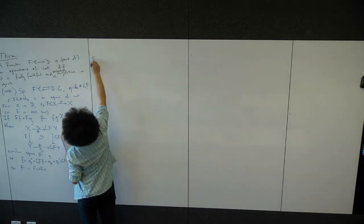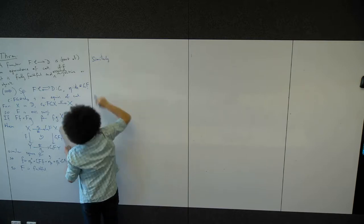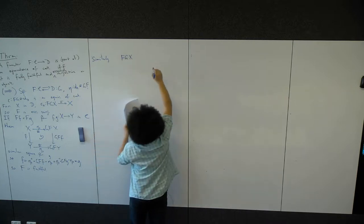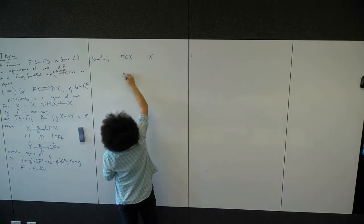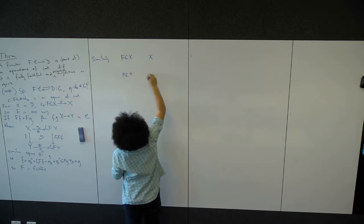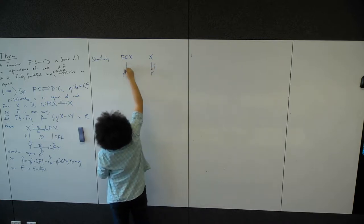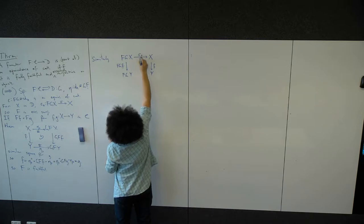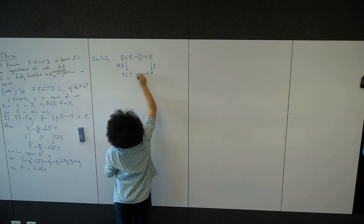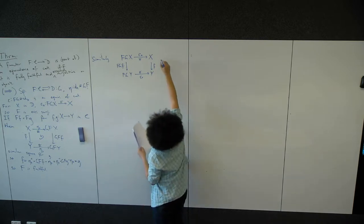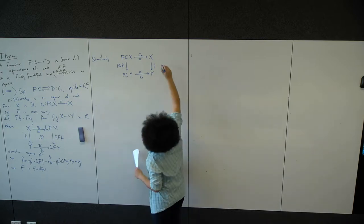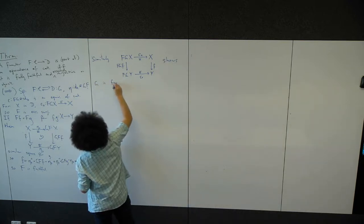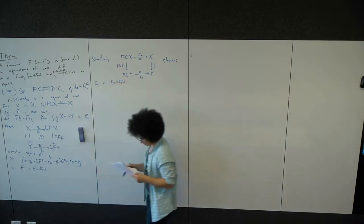Similarly — and I'm not going to go through this carefully, but you can check — the similar diagram but using epsilon_x and epsilon_y. You can use the same argument essentially to show g is faithful.